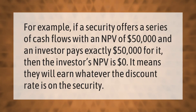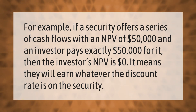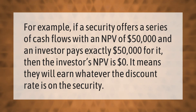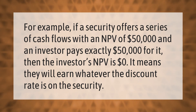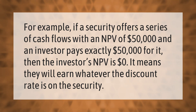For example, if a security offers a series of cash flows with an NPV of fifty thousand dollars and an investor pays exactly fifty thousand dollars for it, then the investor's NPV is zero dollars. It means they will earn whatever the discount rate is on the security.